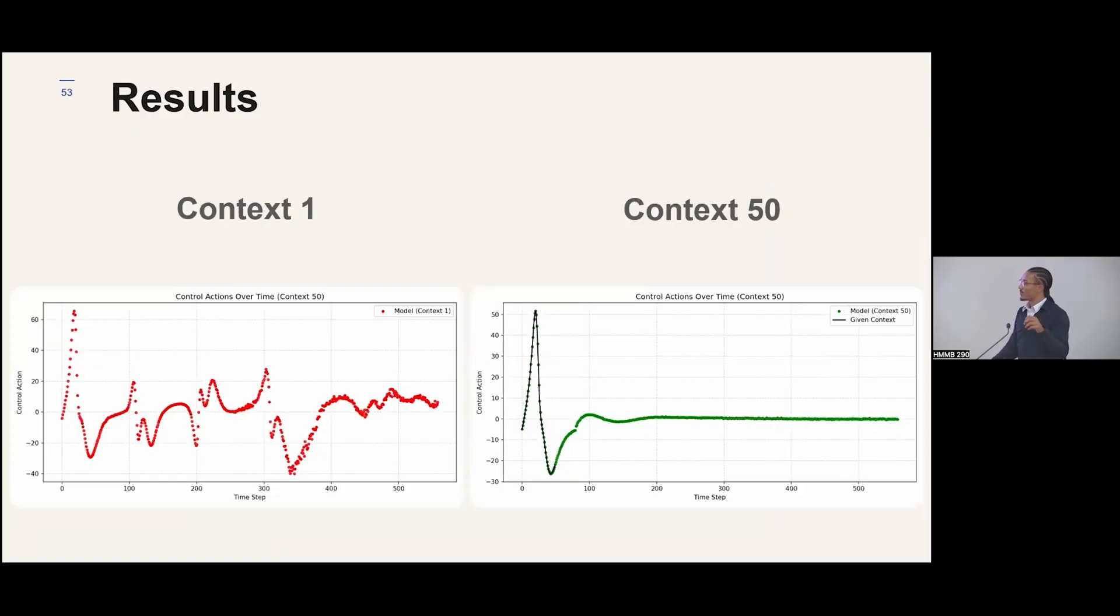And so these are the results. These are our control action plots. As you can see in the context 50, you see the given context is given with the black solid line, and that's up to time step 50, and then it starts making predictions after that. The control actions for the swing-up, which is the portion that's in the given context, are very accurate as well. But a thing to note is that the actual model is not taking control until that black line ends, and then it starts making the control actions.